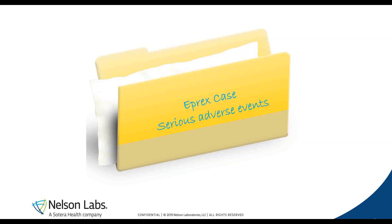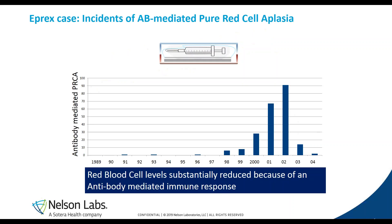Eprex is the commercial product name for EPO, a human recombinant EPO, and it's injected subcutaneously in people, for example, who are suffering from chronic kidney disease, to increase their hematocritic values, to increase their red blood cell count.